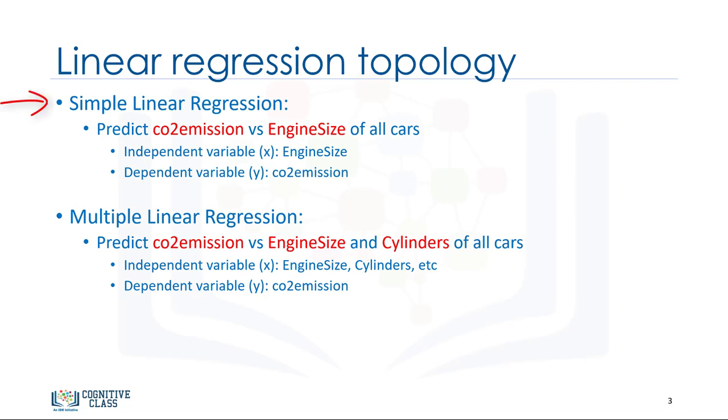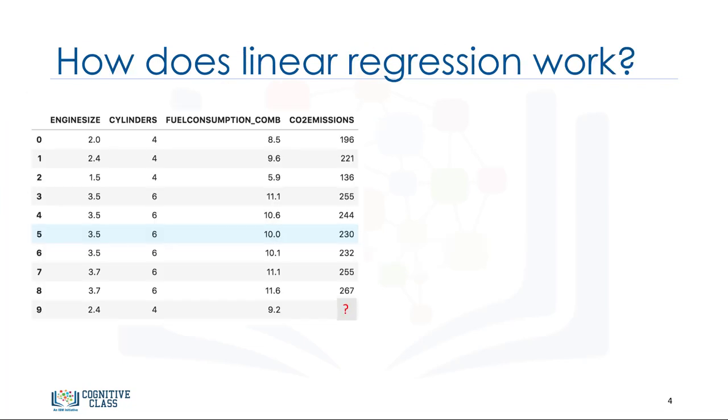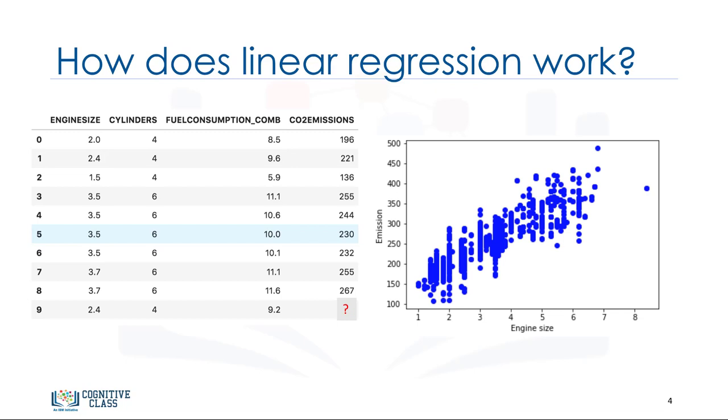Now, let's see how linear regression works. Okay, so let's look at our data set again. To understand linear regression, we can plot our variables here. We show engine size as an independent variable and emission as the target value that we would like to predict. A scatter plot clearly shows the relation between variables where changes in one variable explain or possibly cause changes in the other variable. Also, it indicates that these variables are linearly related.